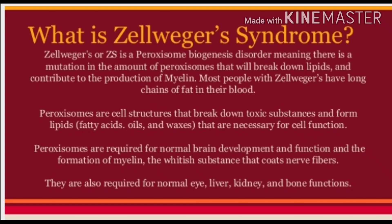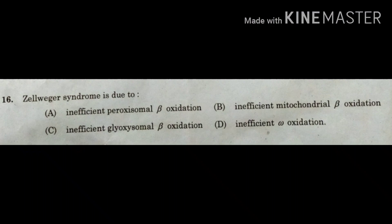Zellweger syndrome is a peroxisome biogenesis disorder. Patients have very low amounts of peroxisomes, so beta oxidation of fatty acids does not take place properly. As a result, long-chain fatty acids accumulate in their cells. Therefore, Zellweger syndrome is associated with inefficient beta oxidation in the peroxisome, and the correct answer for this question is option A — inefficient peroxisomal beta oxidation.